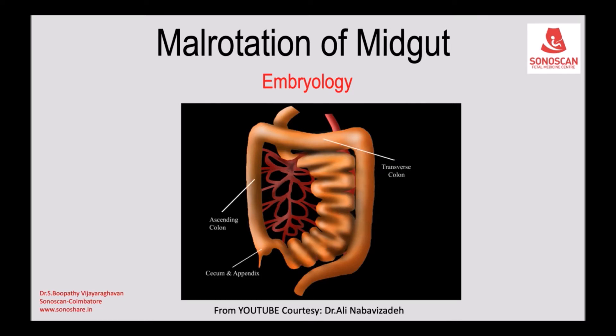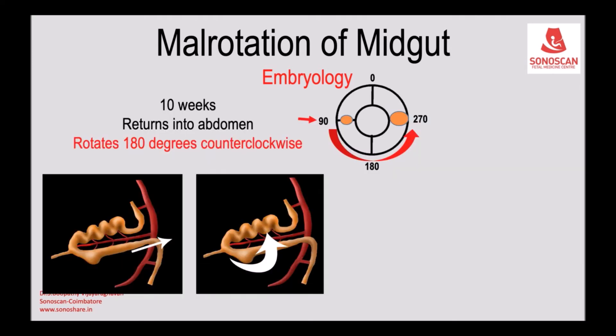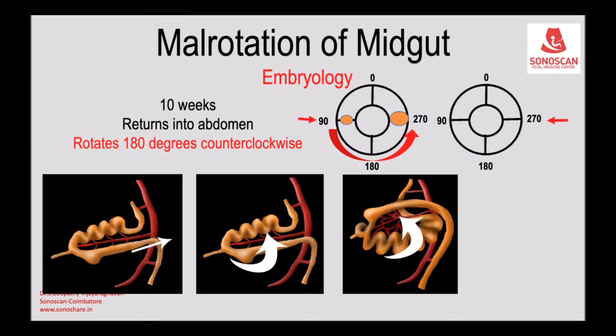Due to lack of space within the abdomen, the midgut herniates into the umbilical cord because of disproportionate elongation. The loop is now cranial-caudal, having rotated counterclockwise, so the cranial limb which was at zero degrees is repositioned.